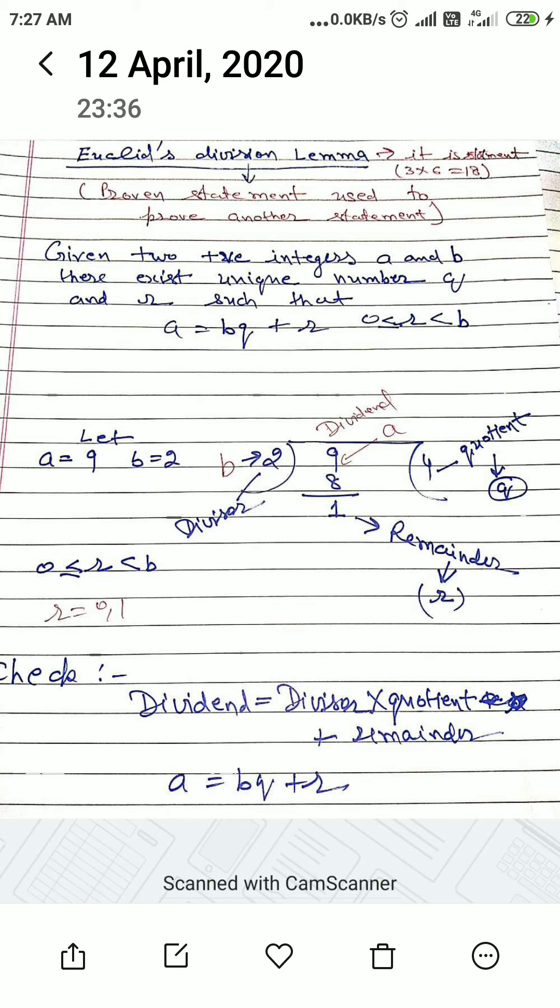Here, two is divisor, it is equal to b. Nine is dividend, it is equal to a. Four is quotient, it is equal to q. And one is remainder, it is denoted by small r.